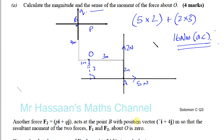That means the moment of F2 about O must be equal and opposite to the moment of F1 — so it must be 16 Newton meters clockwise. The perpendicular distance of the force p from O is four meters, and the perpendicular distance of the force q from O is one meter. Therefore: 4p + q = 16. That's our first equation.